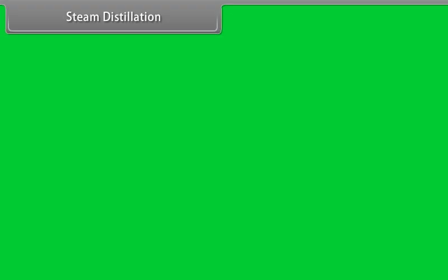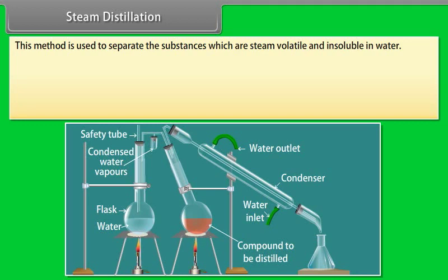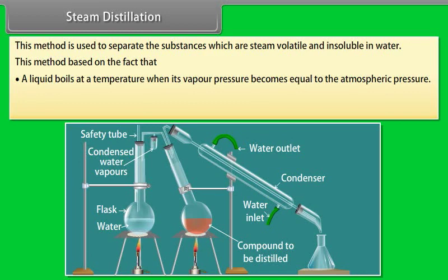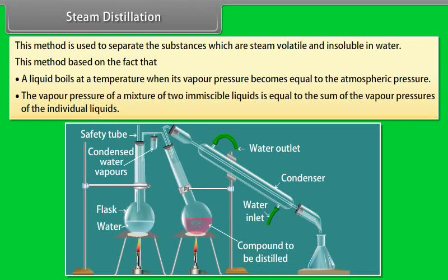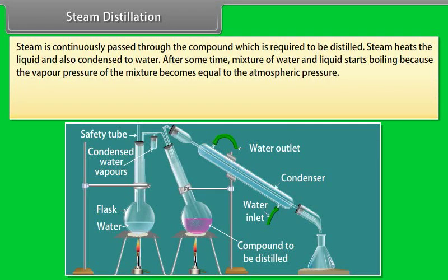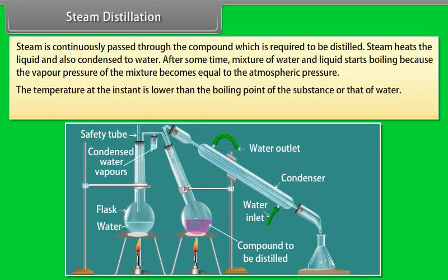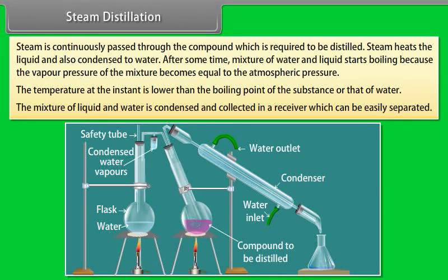Steam distillation: This method is used to separate substances which are steam volatile and insoluble in water. It is based on the fact that a liquid boils when its vapour pressure equals the atmospheric pressure, and the vapour pressure of a mixture of two immiscible liquids equals the sum of the vapour pressures of the individual liquids. Steam is continuously passed through the compound to be distilled. After some time, the mixture of water and liquid starts boiling because the vapour pressure of the mixture becomes equal to atmospheric pressure — at a temperature lower than the boiling point of either substance. The mixture of liquid and water is condensed, collected in a receiver, and can be easily separated.